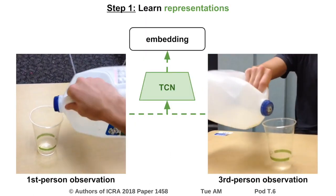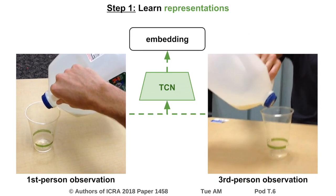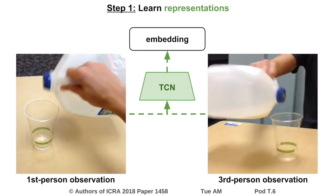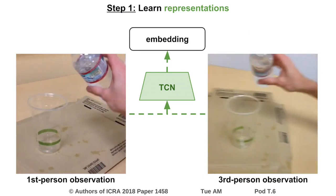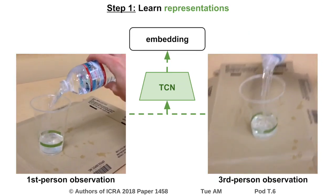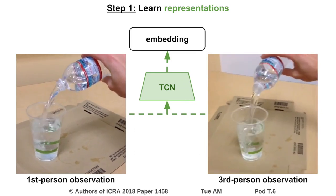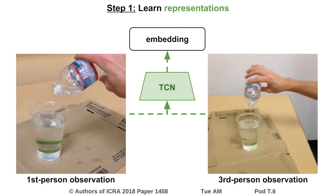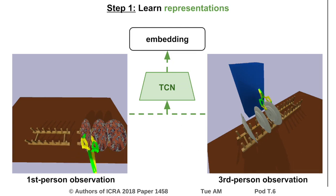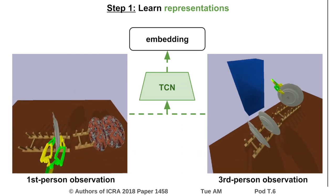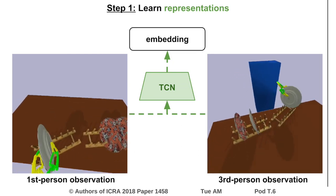The first step of our approach is to learn disentangled representations from video, using time as a supervision signal. In particular, we use multiple synchronized viewpoints of the same scene as a rich signal for discovering different attributes in the world. This embedding is trained with an unstructured and unlabeled collection of videos.